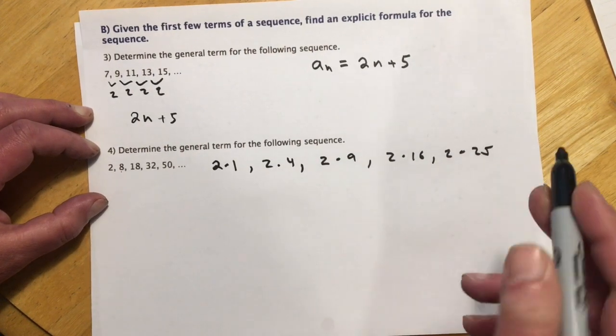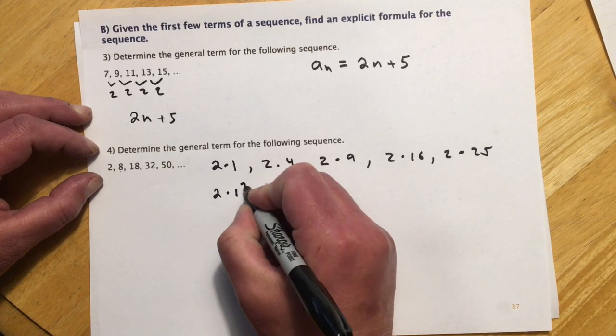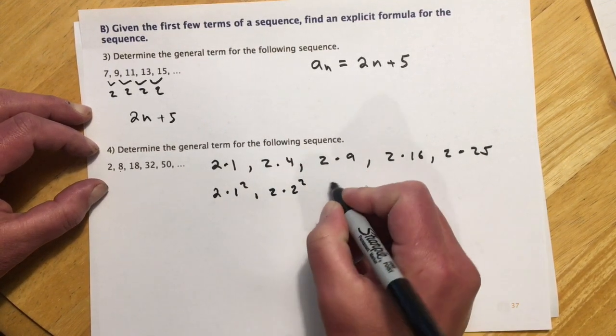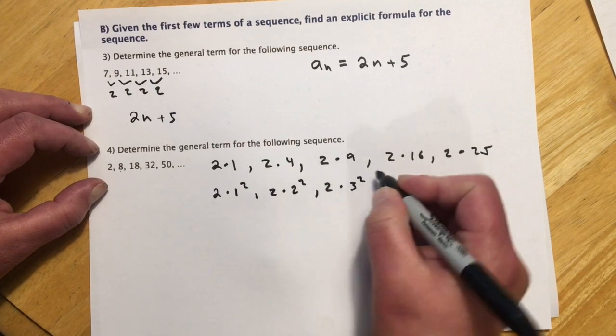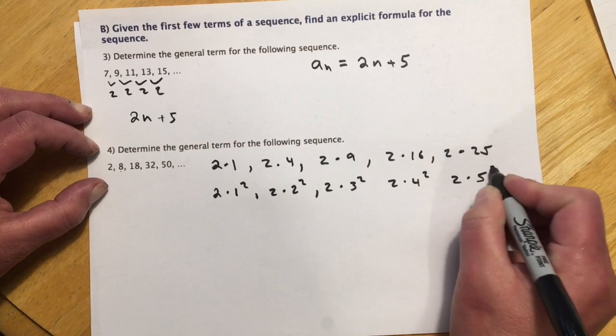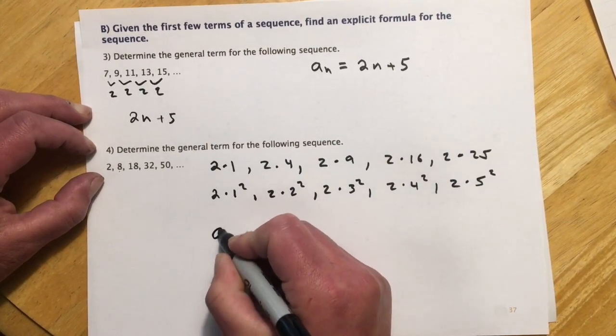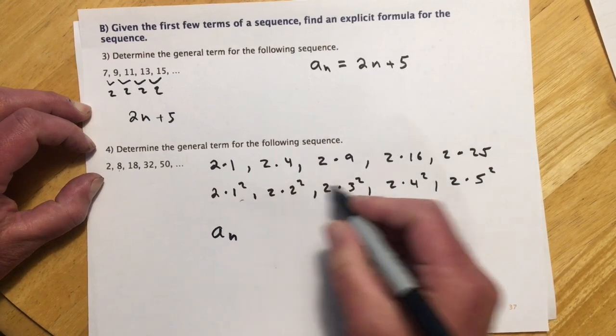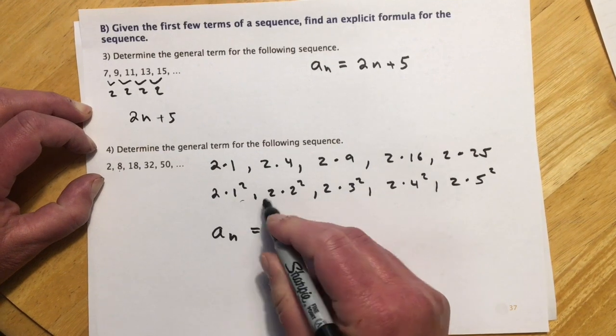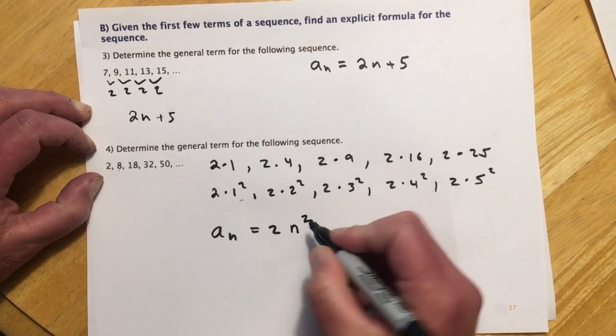And if you look at these numbers, they're all perfect squares. So this is like 2 times 1 squared. This would be like 2 times 2 squared. This would be like 2 times 3 squared. 2 times 4 squared. 2 times 5 squared. And then looking kind of at that pattern, our nth term, it's always multiplied by 2. It's always squared, so the counter is the base. So it would be n squared.